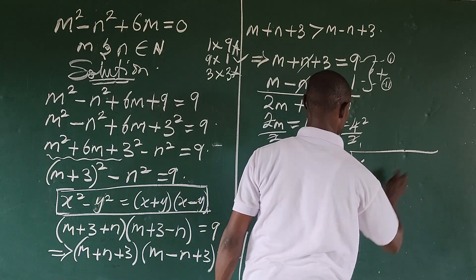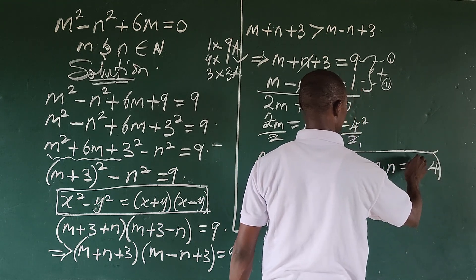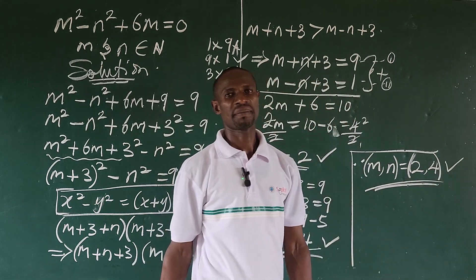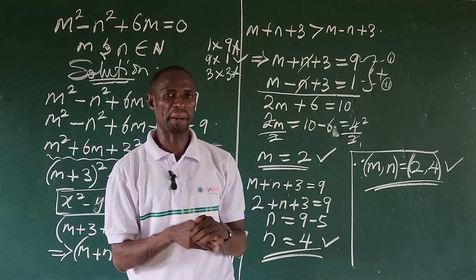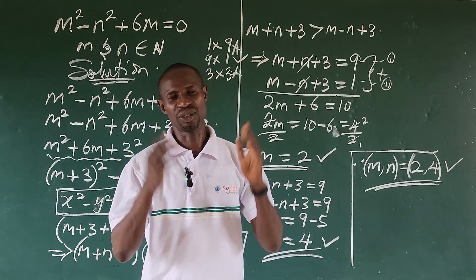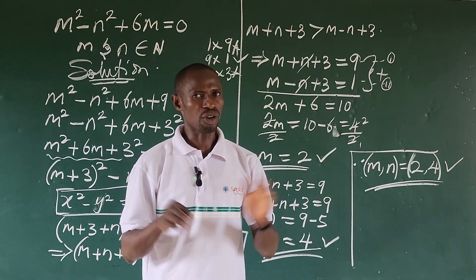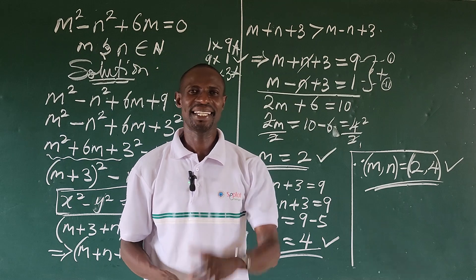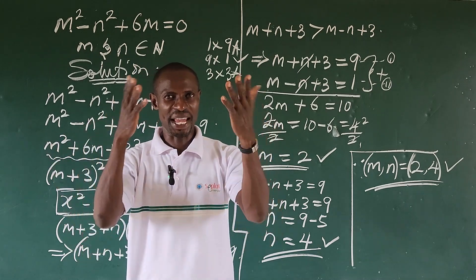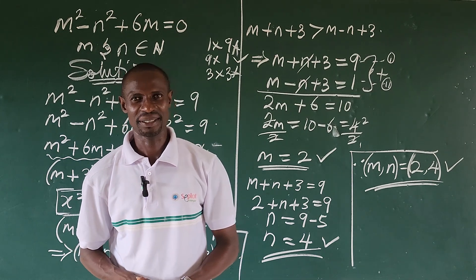Therefore, (m, n) = (2, 4). That marks the end of this math challenge in algebra. If you learned something from this video, give it a thumbs up. Leave any questions in the comment section — we'll reply to all comments. This is All Must TV, where we learn mathematics all the time. Thanks for watching — bye for now!